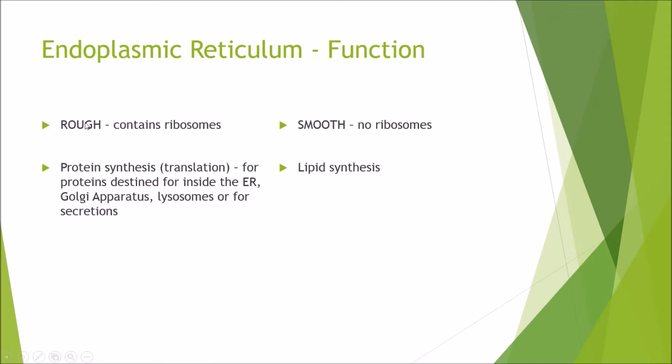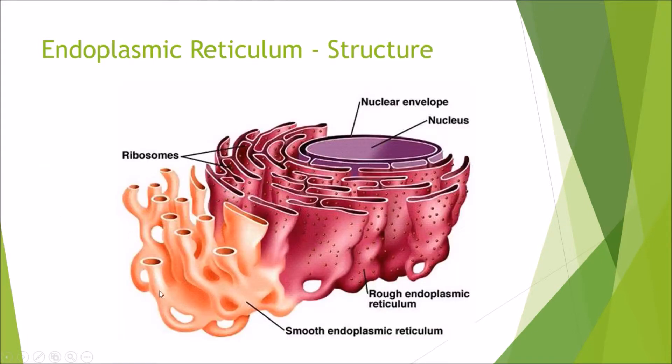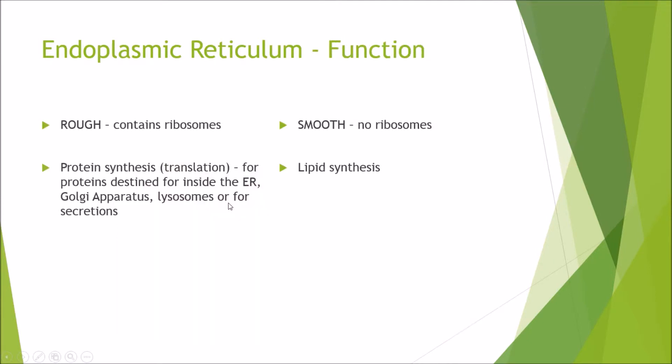So again, the rough endoplasmic reticulum, so that is this one, is what contains ribosomes and it is the site of translation, which is protein synthesis, but they are only destined for inside the endoplasmic reticulum, the Golgi apparatus, lysosomes, or for secretions. The smooth endoplasmic reticulum, which is the one with no ribosomes, which is this one here, is the site of lipid synthesis.